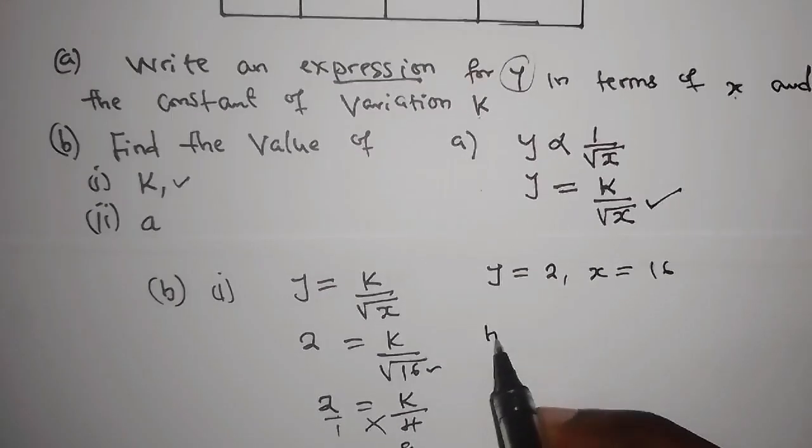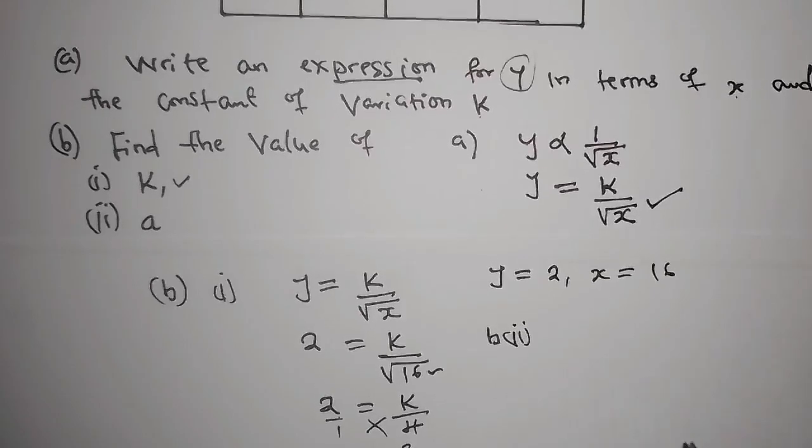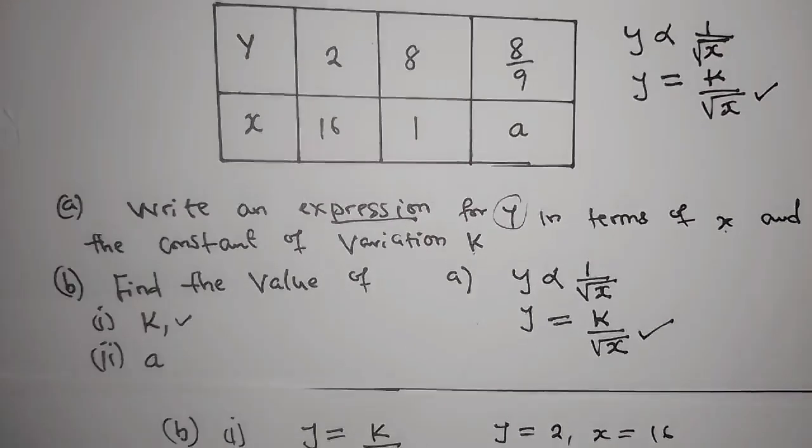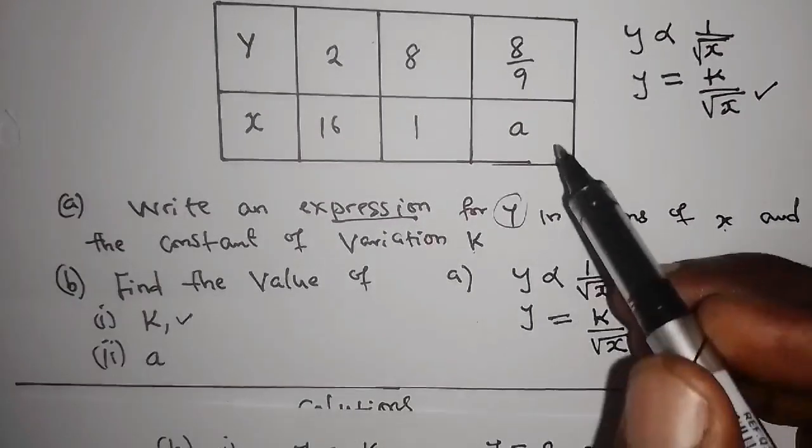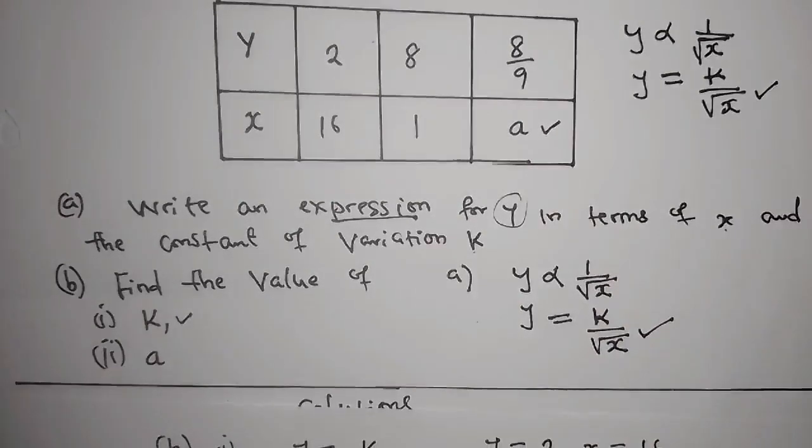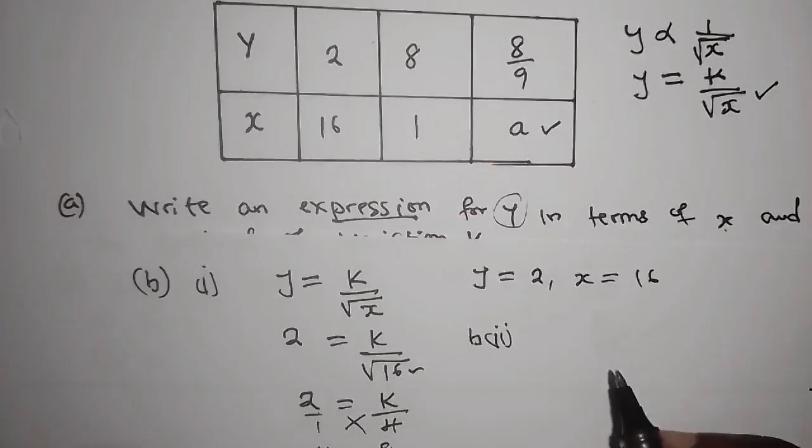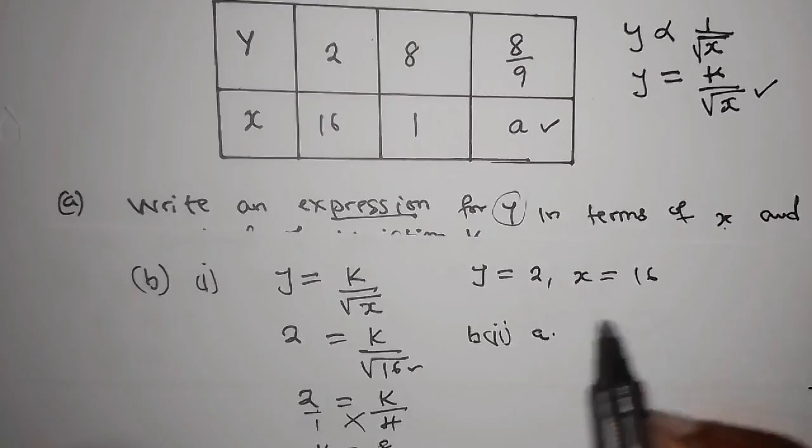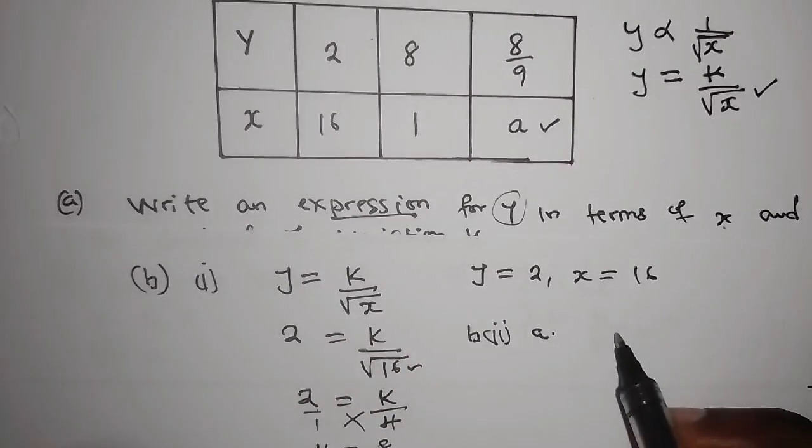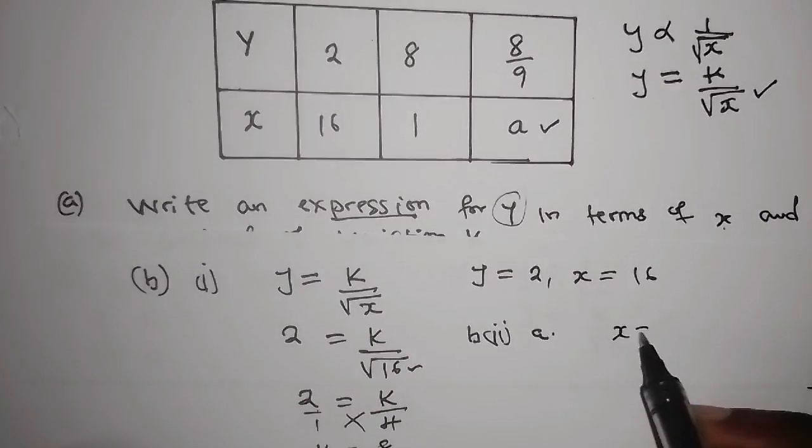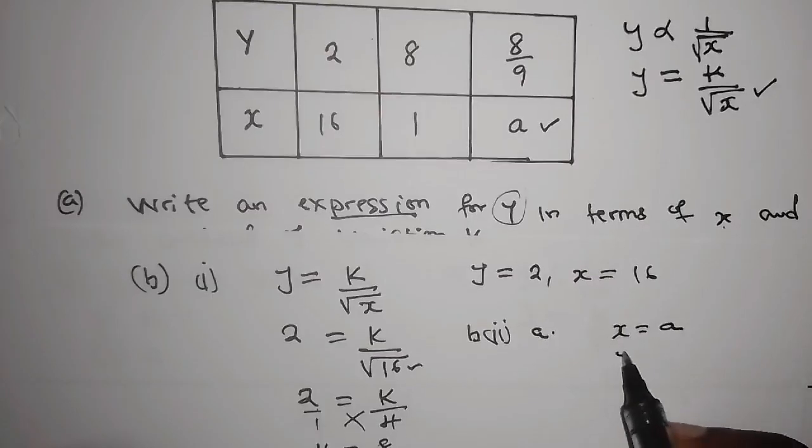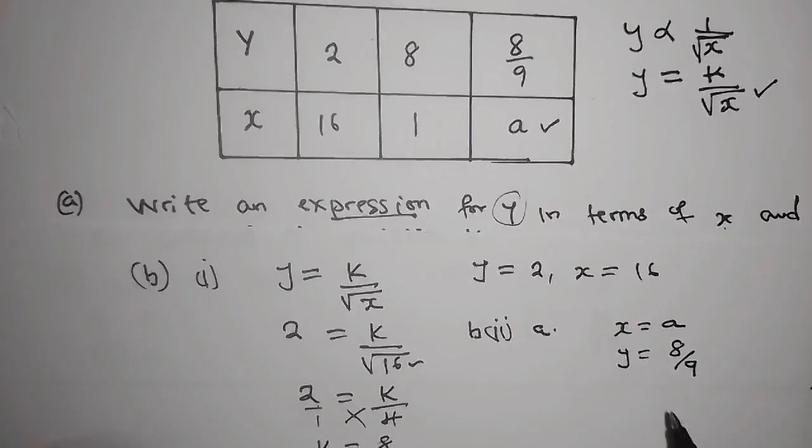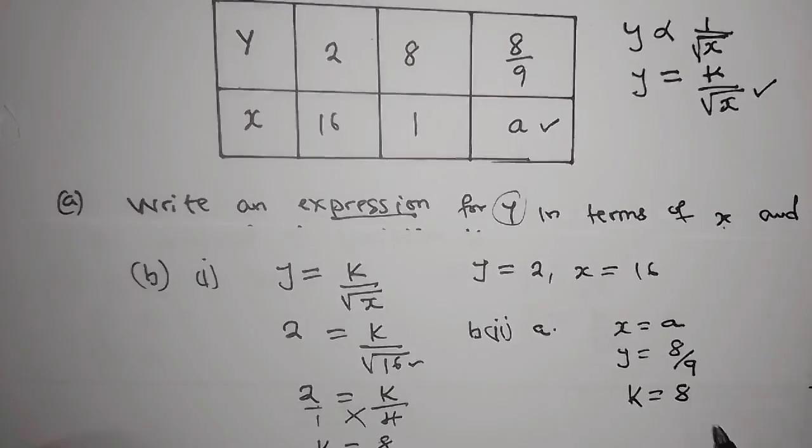And now on b(ii). How do you go about this one? This one says find the value of a. So on this one, finding the value of a is just the same as finding the value of x. So I'm going to say x is just a, and y is just the corresponding 8 over 9. And we know that the value of k is just 8.